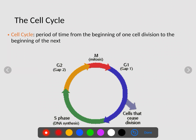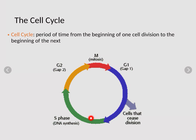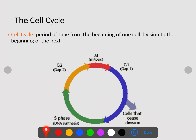The cell cycle is the period of time from the beginning of one cell division to the beginning of the next. The cell cycle goes through a process of growing, developing, replicating DNA, preparing for cell division, and then splitting. Then our cells just keep going through this process over and over again to make more cells.